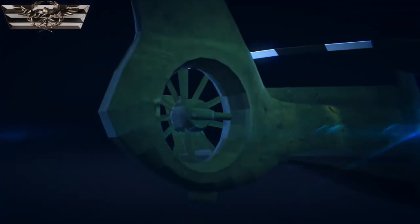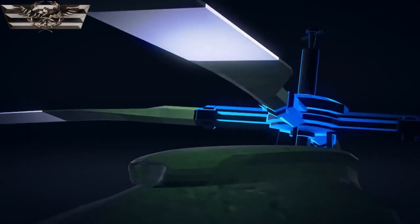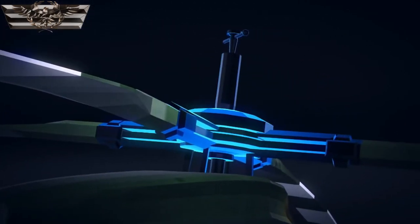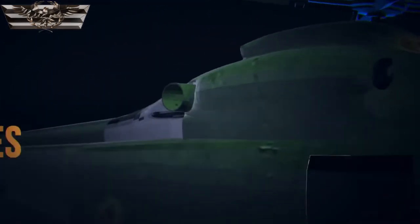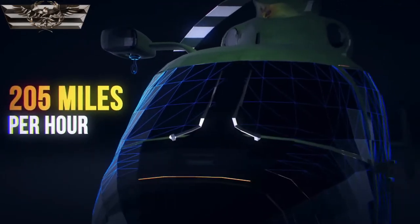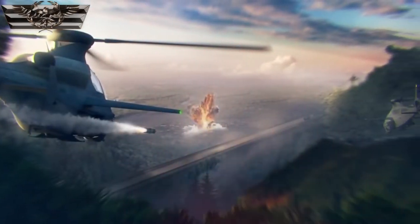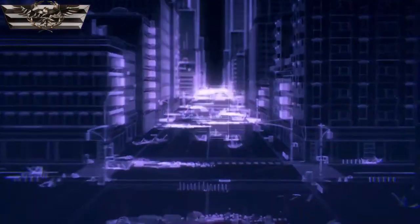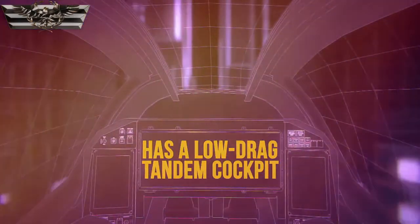When the United States Army laid out the requirements for this helicopter, designers knew they had to use all of the cutting edge technology available to them. One of those requirements is an aircraft that can cruise at speeds in excess of 205 miles per hour. This helicopter was built with the ability to dash when it needs to and has a low-drag tandem cockpit, which helps it to be a much smaller target to acquire.